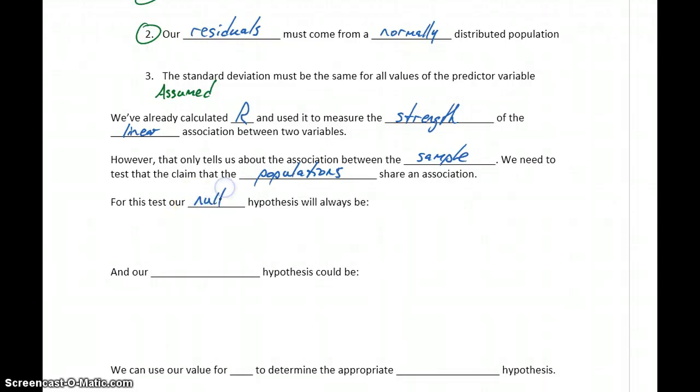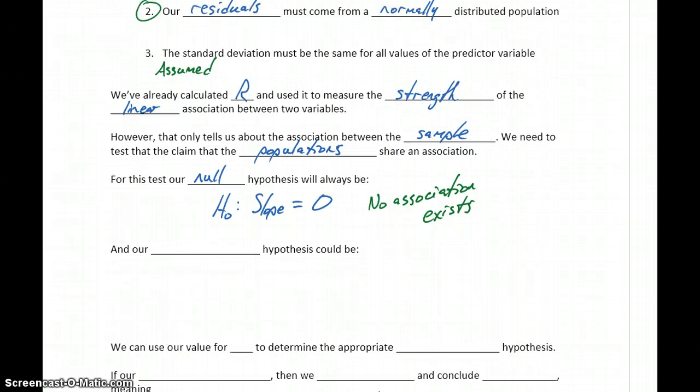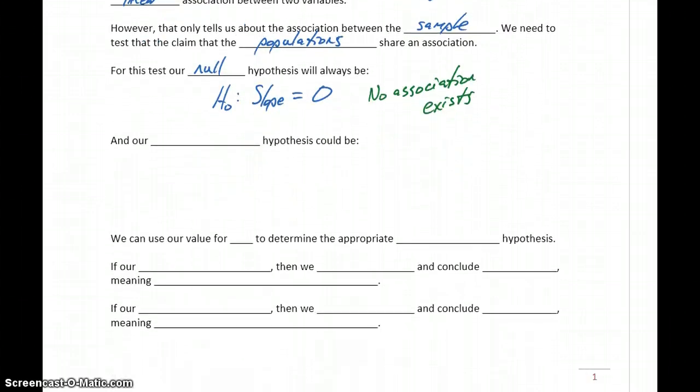For our null hypothesis, we always have the same statement. We start with the null hypothesis that the slope in our linear model equals zero. If the slope equals zero, that's essentially saying no association exists. That's always our starting assumption. We assume no variables have associations unless there's enough evidence to convince us to reject that original assumption.